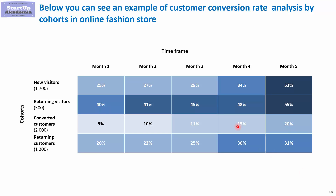Let's have a look at a short example. Here we have mapped the conversion rates by cohorts and we have four cohorts: new visitors, returning visitors, converted customers, and returning customers. In brackets, you've got the number of people in each cohort, and we have months across the top. As you can see, we can see growth in conversion rates for most cohorts. However, there are big differences between cohorts — it seems that the conversion rate for the returning visitors cohort is much bigger than for the other cohorts.